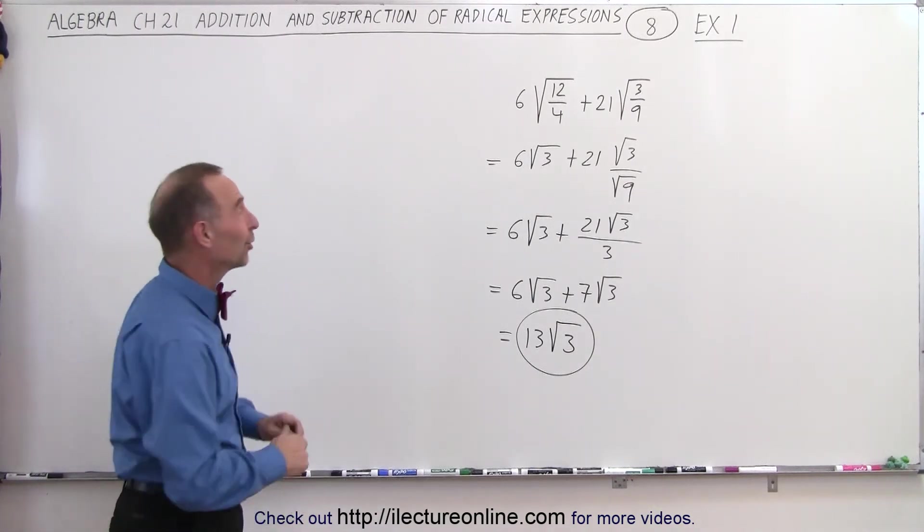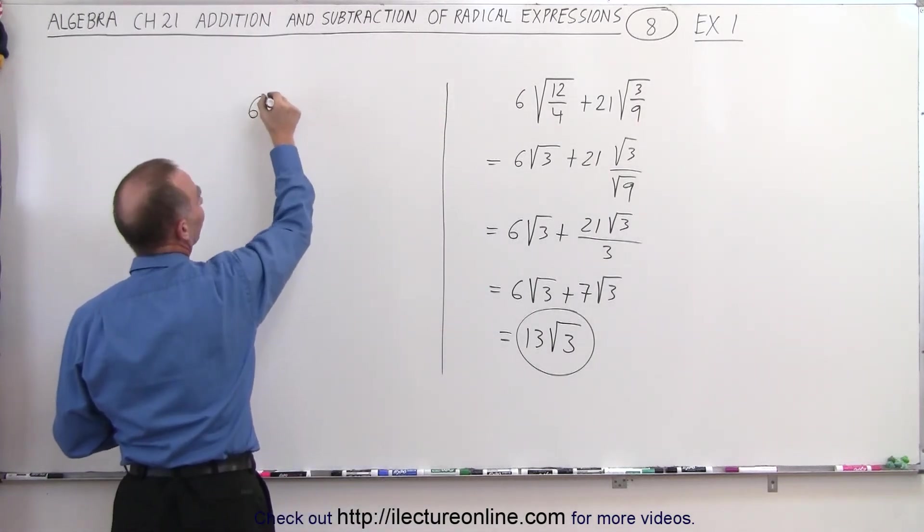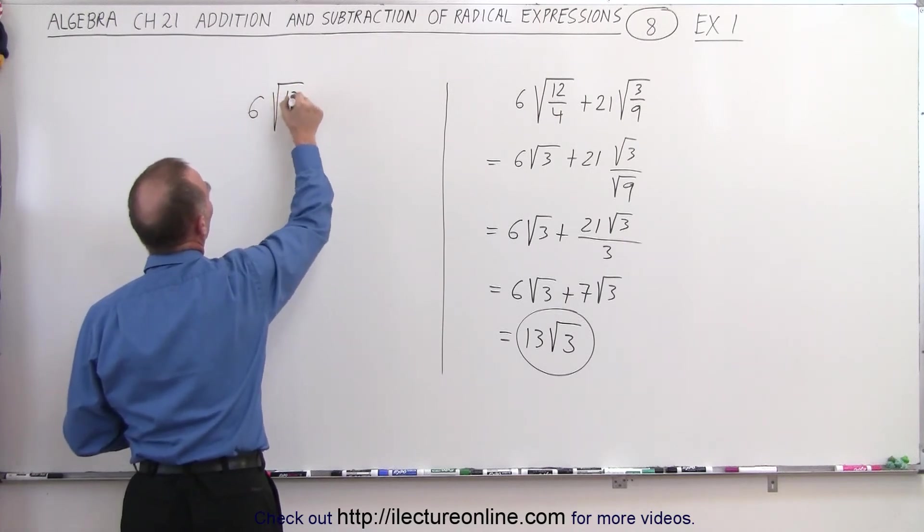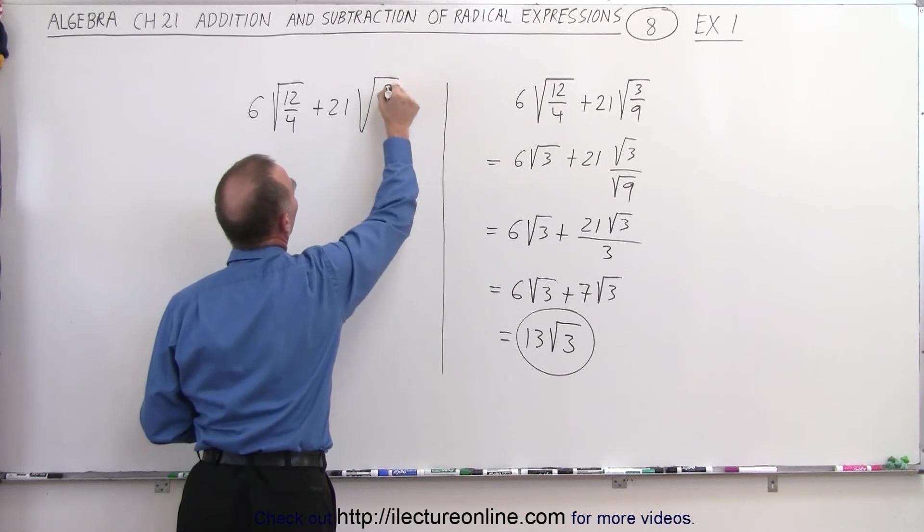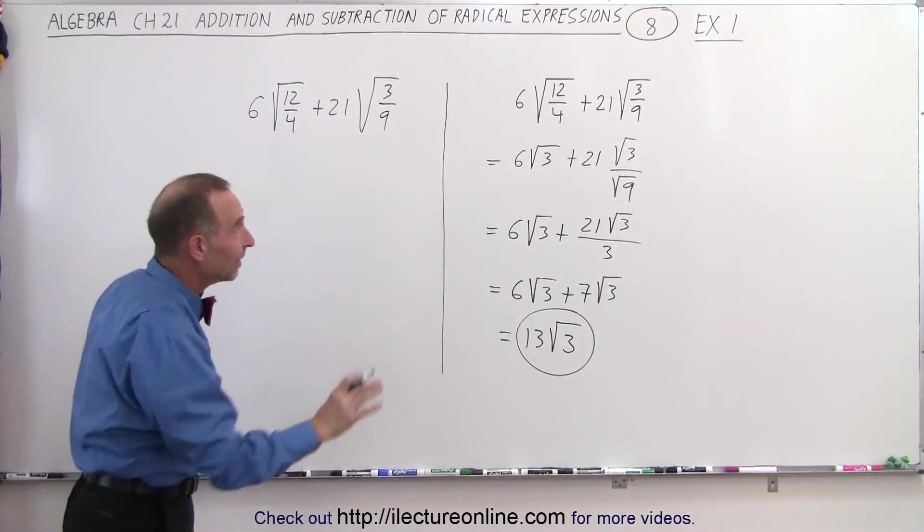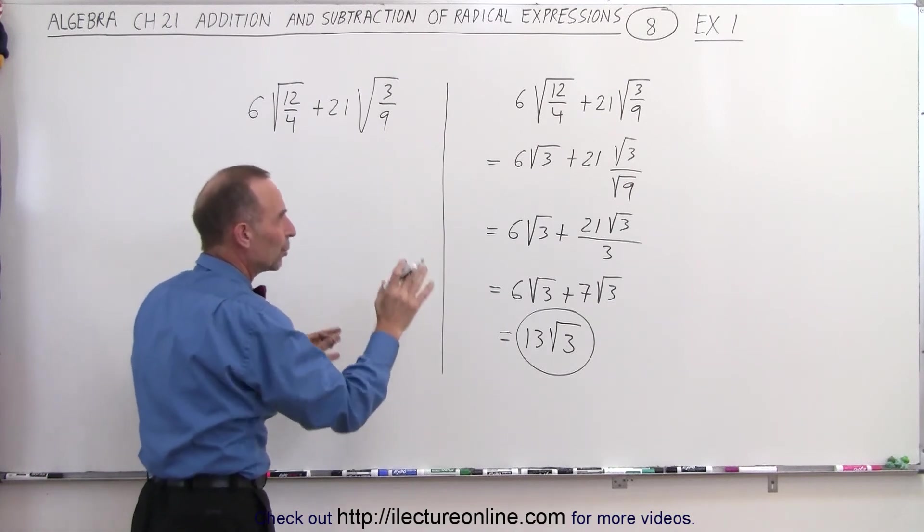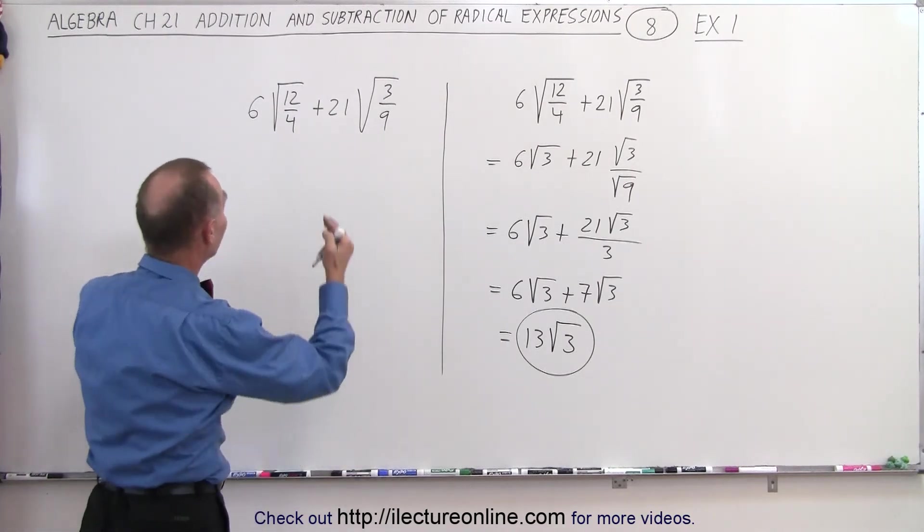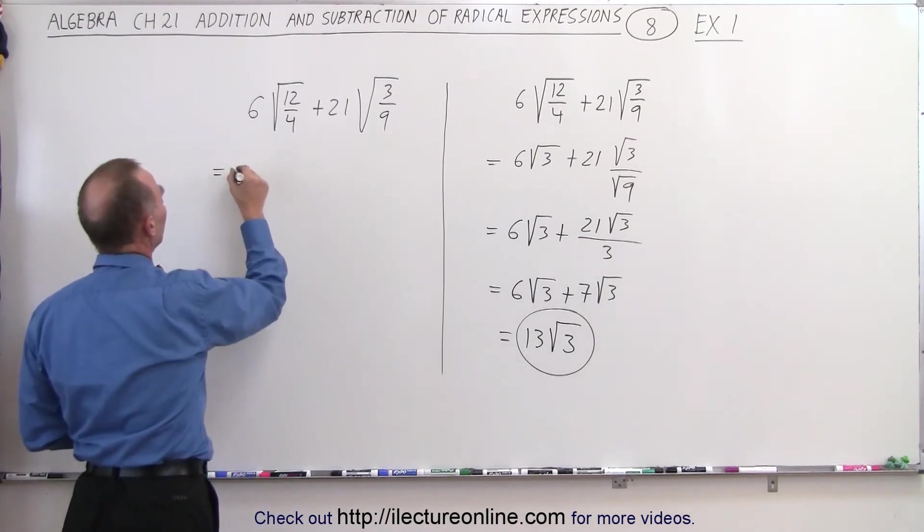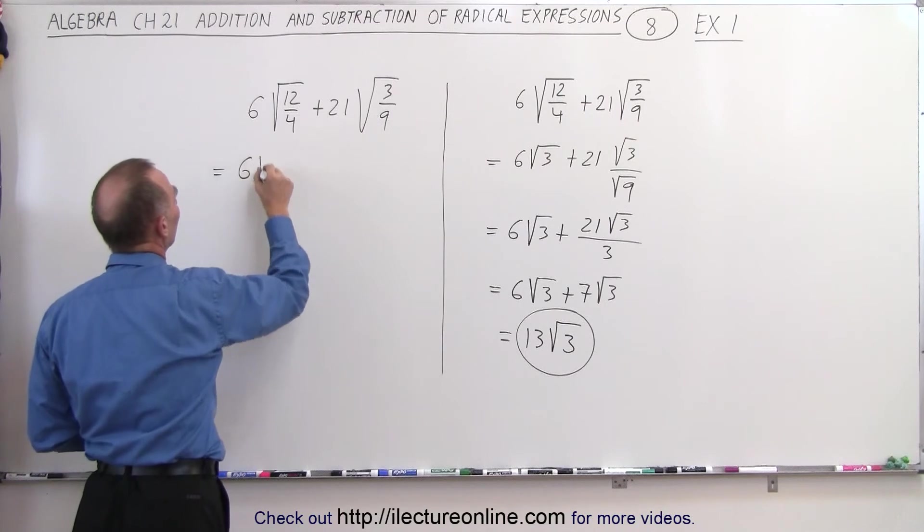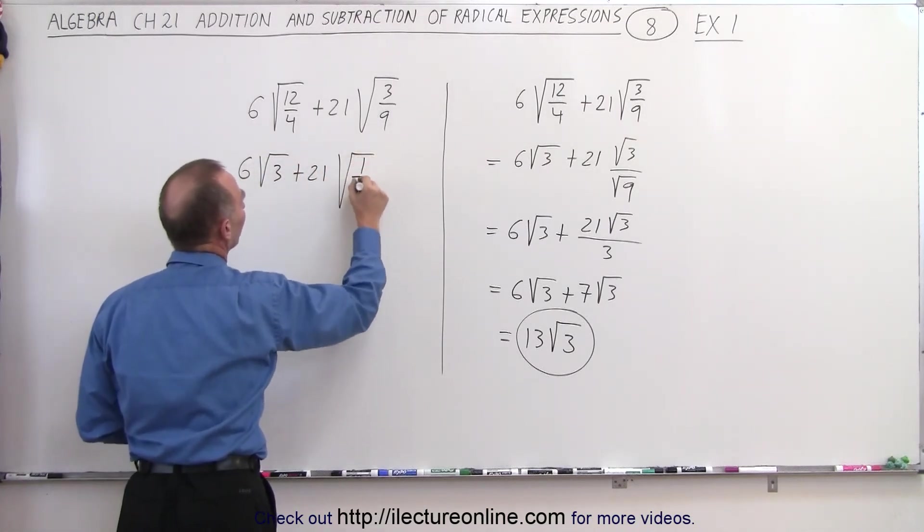So let's rewrite the problem: 6 times the square root of 12 over 4, plus 21 times the square root of 3 over 9. Let's say that instead, thinking ahead, this could end up with the square root of 3 in the numerator. Well, what if we simply reduce the fractions in each radical? This would then become 6 times the square root of 3, plus 21 times the square root of 1 over 3.